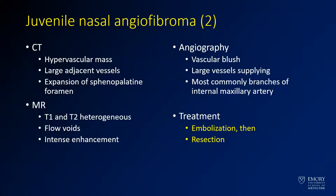On MR, you're going to see similar findings — intense enhancement with flow voids. If you happen to have an angiogram, you may see a vascular blush with large vessels from the external carotid artery supplying that area. The treatment for these cases is first embolization to make resection easier and minimize the risk of bleeding, followed by resection.